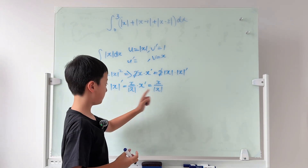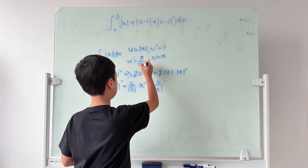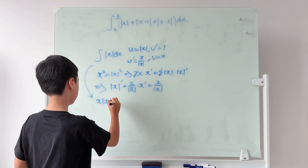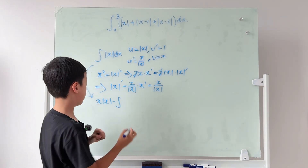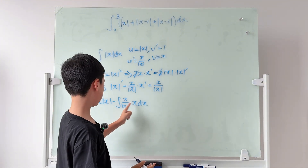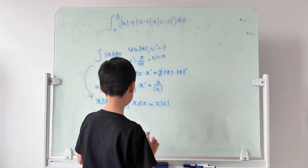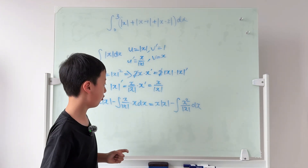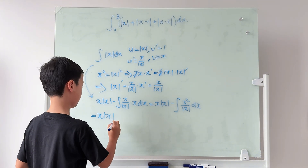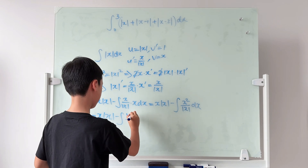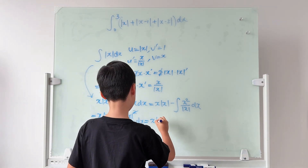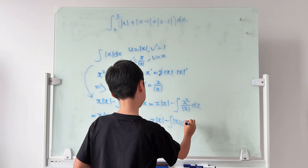Now u' is x/|x|, so we can apply integration by parts. The first part is u times v, giving x·|x|, minus the integral of u'·v, which is x²/|x|. Since x² equals |x|², this becomes |x|²/|x|, which simplifies to |x|. So we get x·|x| minus the integral of |x| dx.